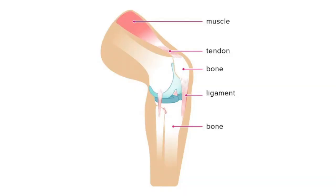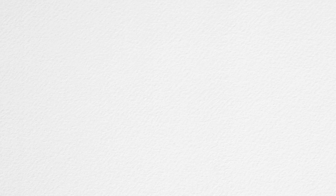Ligaments are bands and strings of very strong connective tissue that keep bones in place. And lastly, tendons are bands of tissue that are responsible for connecting the ends of muscle to our bones.